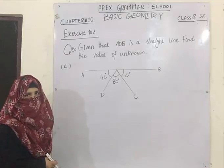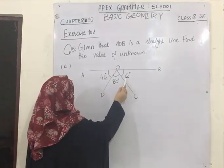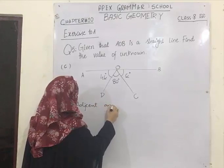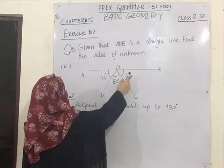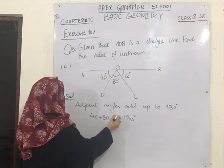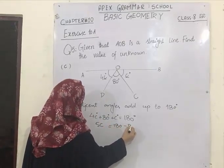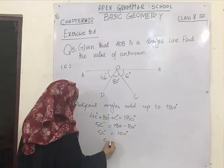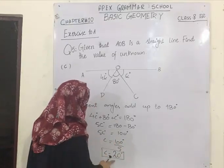Next I am going to solve the same question but its C part. In the C part, again AOB is a straight line and you have to find the value of the unknown, which is 'c'. Adjacent angles add up to 180 degrees. These 3 angles add up to 180 degrees. Since 4c and c are like terms, they add up to make 5c. 80 is being added on one side so it will be subtracted, giving 100 degrees. Since 5 is multiplied with the unknown, it will be divided on the other side. After division, the value of c is 20 degrees.